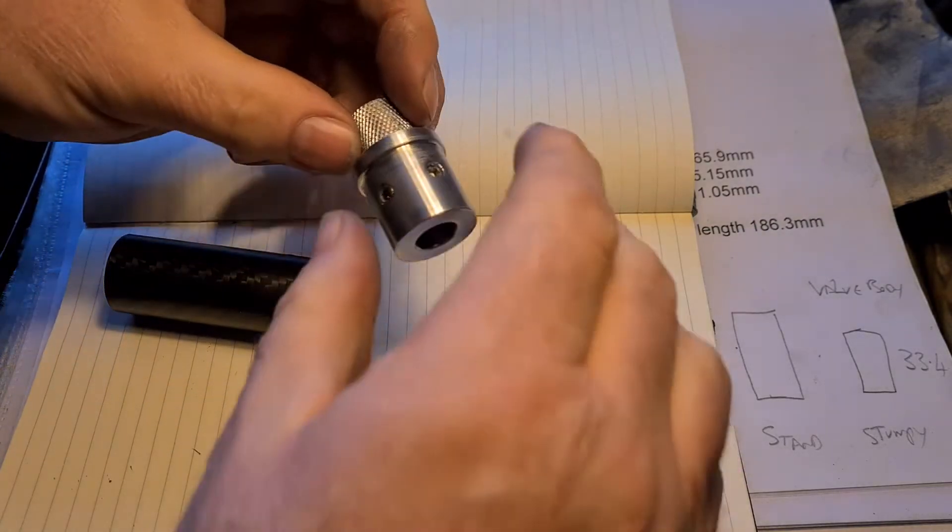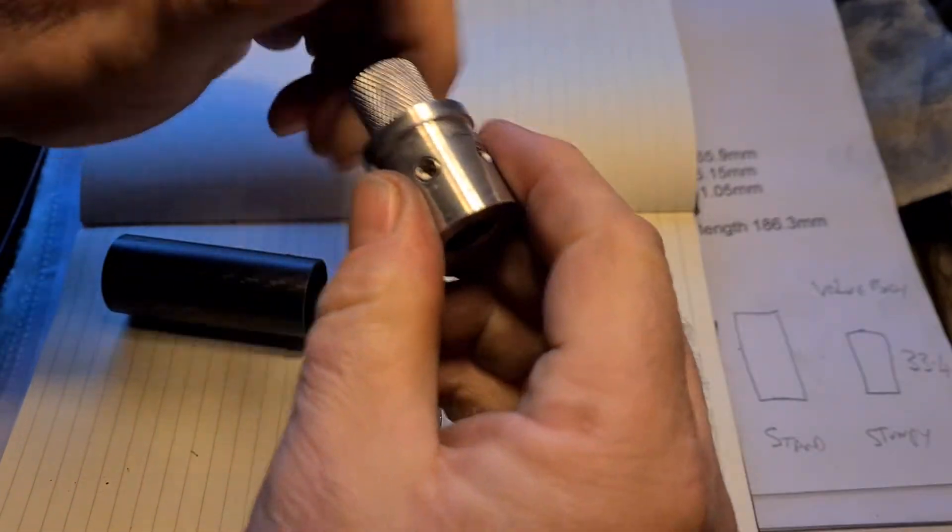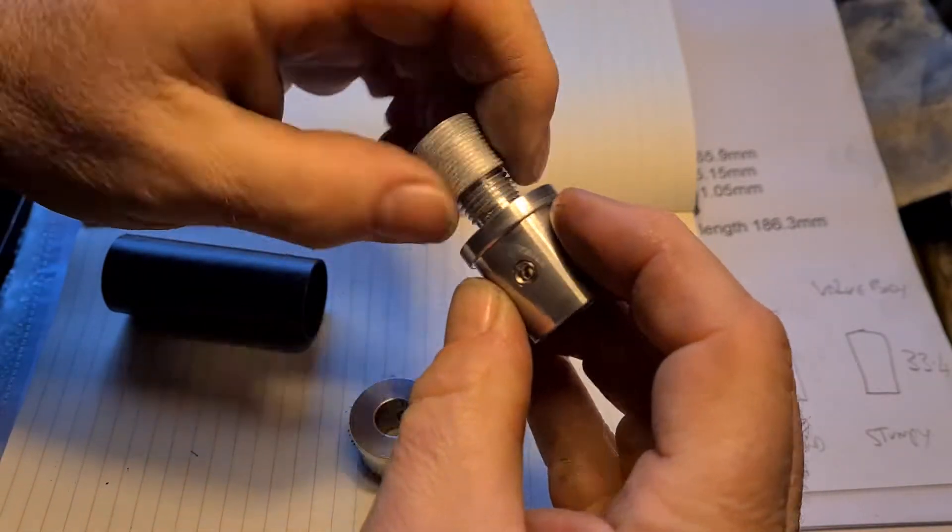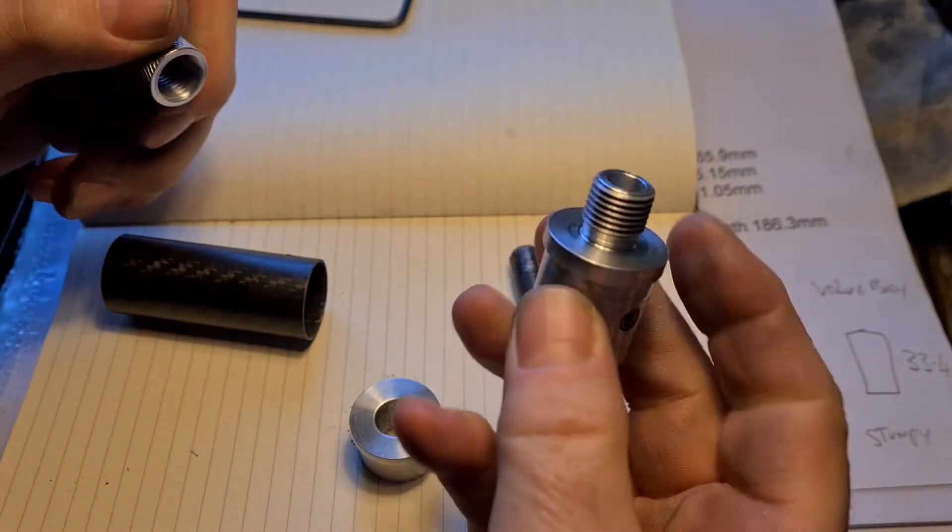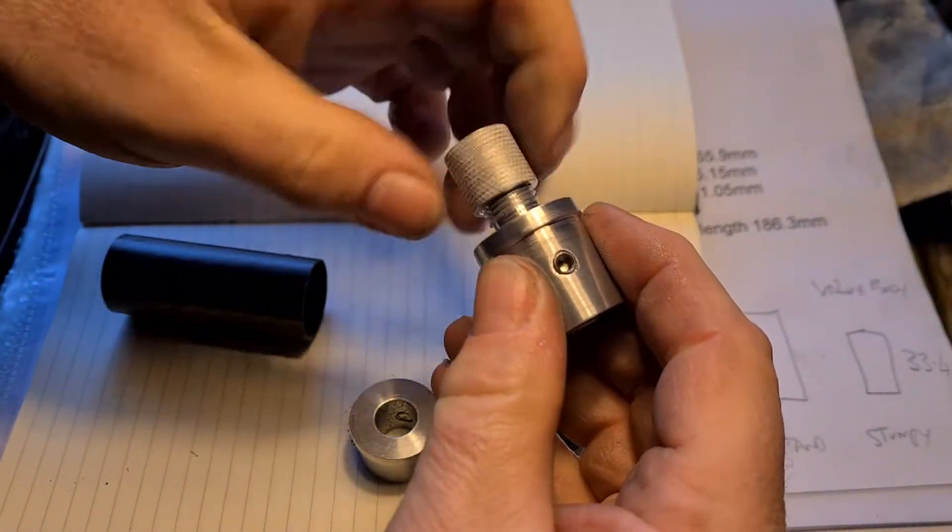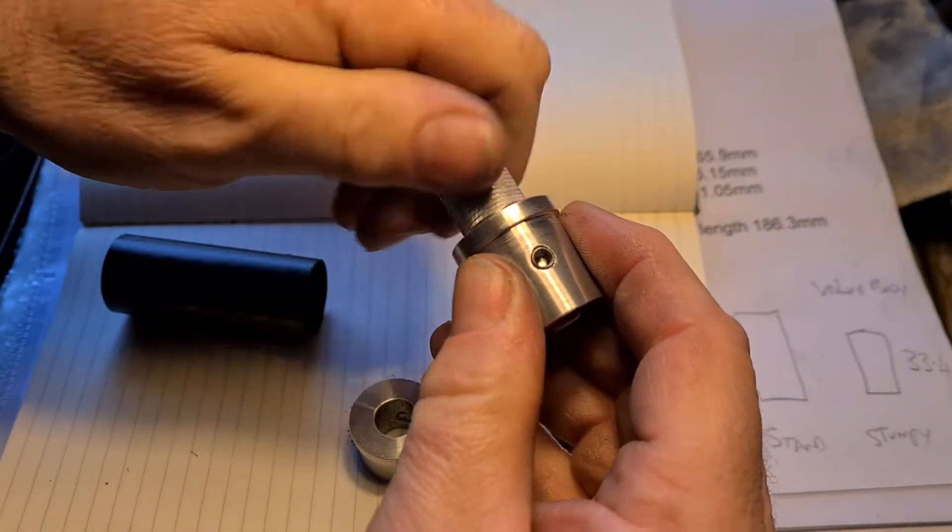So what you start with, you've got your front part of your shroud with your half inch 20 UNF thread adapter. It just keeps the threads protected.